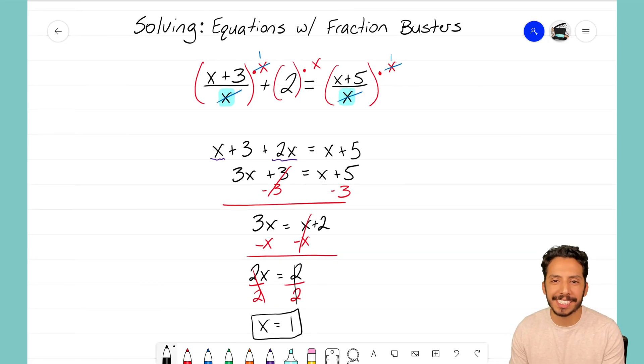So look at that. Notice that fraction busting didn't even take up majority of the time here. It's a quick little method we can use at the start of the problem to end up with a much simpler equation, so that we can just do some simple linear calculations: combining like terms, moving the constant, moving the variable, dividing by the coefficient. This part here should be second nature to us at this point.